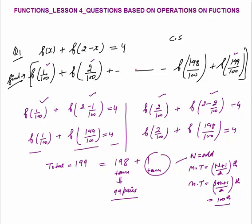What is the 100th term? By common sense: the first term is 1/100, the second term is 2/100, the third is 3/100. So the 100th term is f(100/100) = f(1). Now I am calculating the total sum.